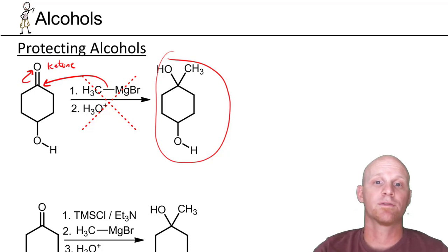So problem is, this is not going to work very well at all. Your Grignard reagent is a very strong nucleophile, but it's also a very strong base, and a Bronsted acid-base reaction is generally faster than a nucleophile-electrophile reaction.